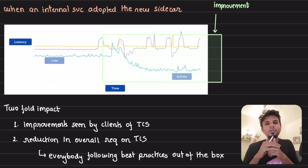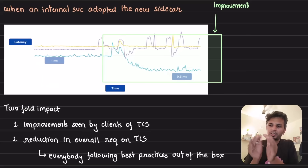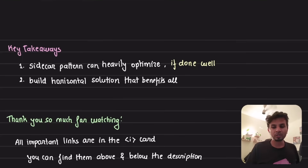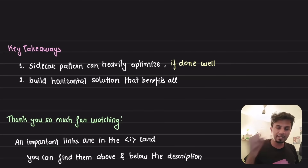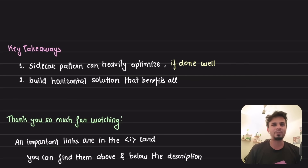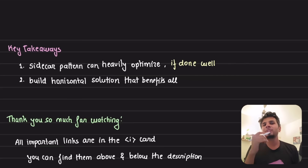This is the key importance of sidecar over a library. If you want to be language-agnostic, sidecar is the way to go — a little more complex, but you don't need to manage multiple library environments. Sidecar is a better option in that case. First key takeaway: sidecar pattern can heavily optimize your system if done well. There are examples where sidecars that were not properly configured caused performance issues, but when used well, it's a very effective optimization strategy.